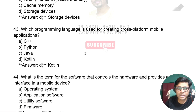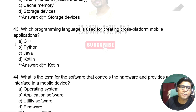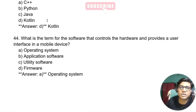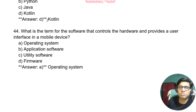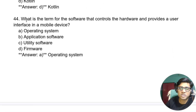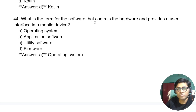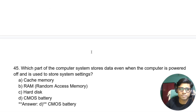Which programming language is used to create cross-platform mobile applications? The answer is Kotlin. Kotlin is the latest language for cross-platform mobile application development, used for both Android and iOS. What is the term for software that controls the hardware and provides a user interface in a mobile device? The answer is the operating system.